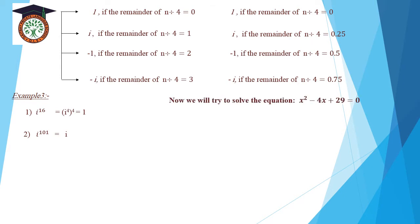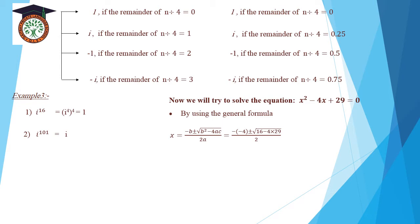Now we will solve the equation x² minus 4x plus 29 equals 0 using the general formula. The general formula is x equals negative b, plus or minus, square root of b² minus 4ac, over 2a.